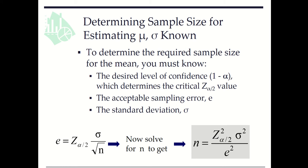To determine the required sample size for the mean, we need to know the desired level of confidence (1 - α), which determines the critical value z_{α/2}, the acceptable sampling error e, and the population standard deviation σ. Then we can find n using the formula.